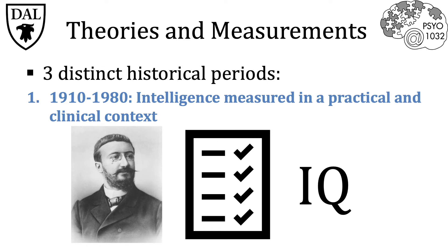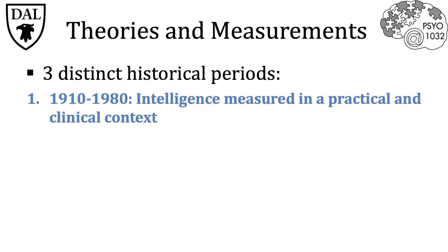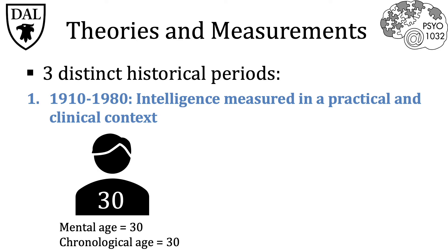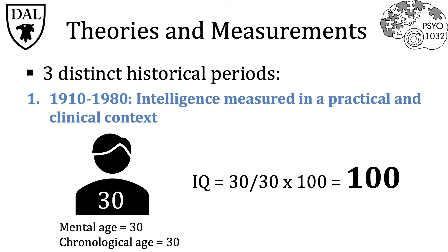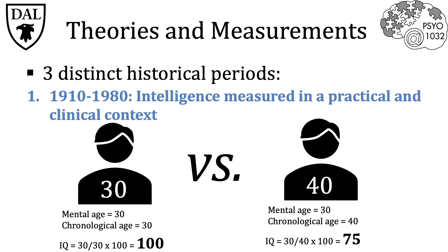This method of scoring became very clearly problematic across different ages. For example, consider a 30-year-old and a 40-year-old man who both score 30 on the test. The 30-year-old has a mental age of 30 and a chronological age of 30, giving an IQ of 100. The 40-year-old also has a mental age of 30 but a chronological age of 40, giving an IQ of 75. So even though both men performed exactly the same on the test, the 40-year-old scored three-quarters that of the 30-year-old due solely to their age difference.